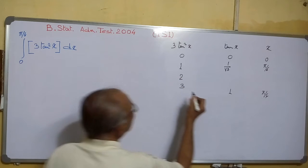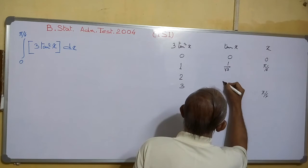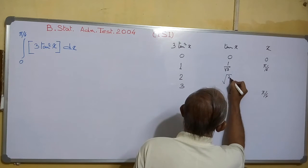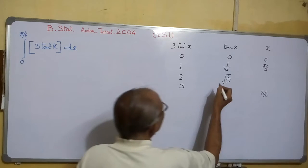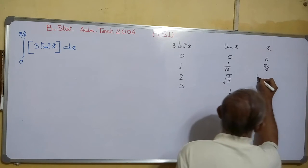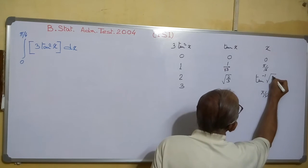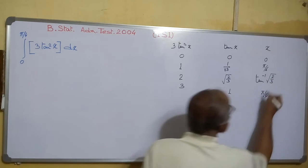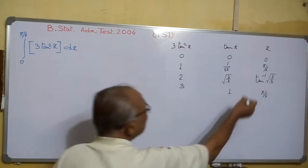Again, 3tan²x equals 2, that means tan x equals √(2/3). So this x will be tan⁻¹(√(2/3)). These are the places we have to first search.